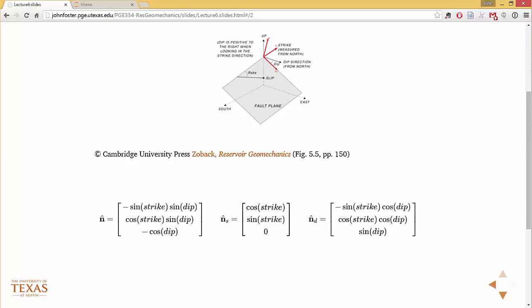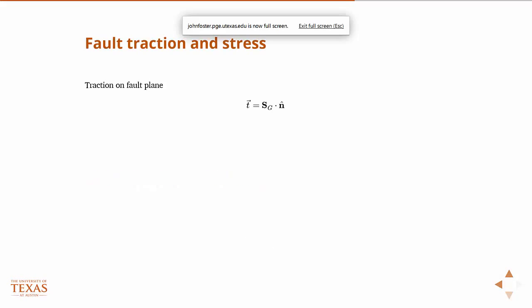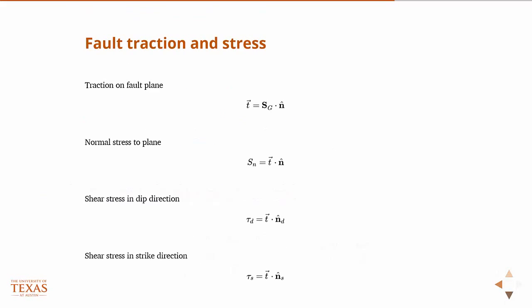If you know the angle of the strike and the dip as defined up there, you just plug them in and you can get those normal vectors. These are just the equations I wrote out: normal stress to the fault plane, shear stress in the dip direction, shear stress in the strike direction. We'll see soon that it's the ratio of the normal to the shear which indicates whether something's going to slip or not — which should be intuitive to all of us if you know anything about friction.